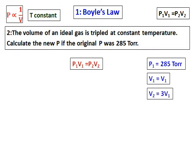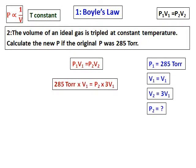We need to calculate P2. Substituting all the values into the formula, we get P2 = 95 torr, which is one third of the original pressure. This confirms that when volume is tripled, pressure decreases by one third — volume increases, pressure decreases.